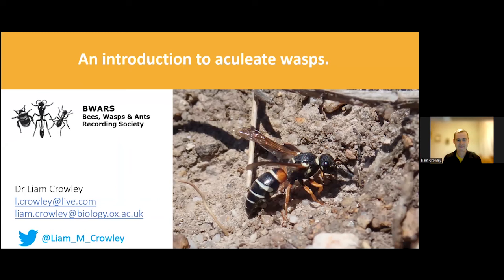Hello everybody. I just want to say how excited and happy I am to see so many people here this evening to join us and talk about wasps. I'm Liam. I am a postdoctoral researcher at the University of Oxford, working on the Darwin Tree of Life project, where we're trying to sequence the full genome of every single species of eukaryote in Britain and Ireland. I'm also really interested in bees, ants and wasps, and I'm a member of BWARS, involved with the data team.